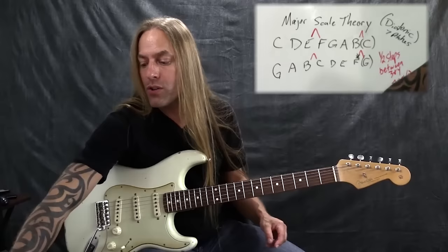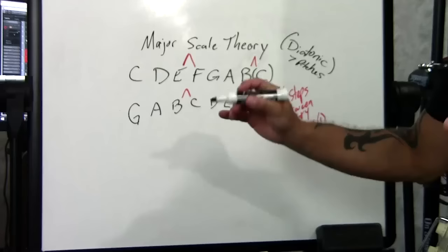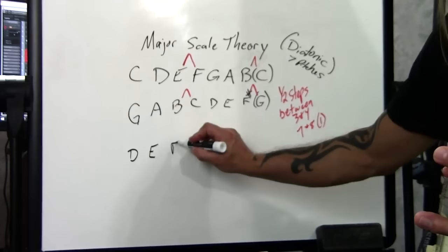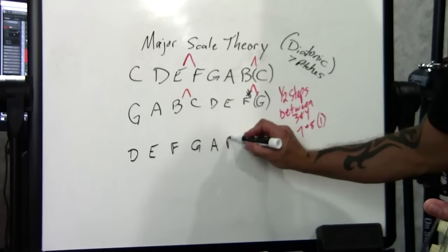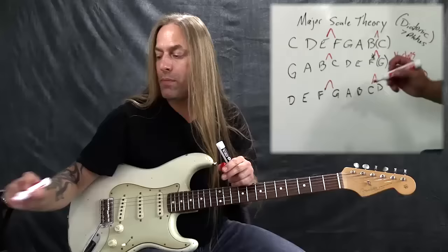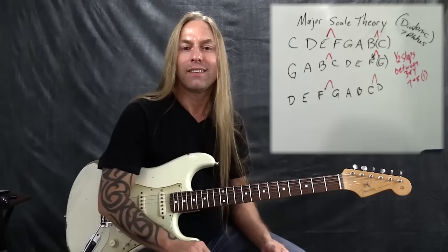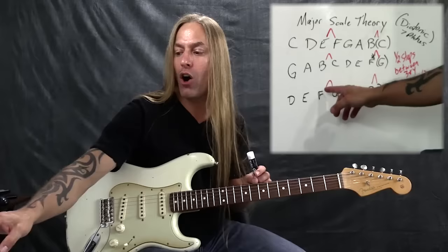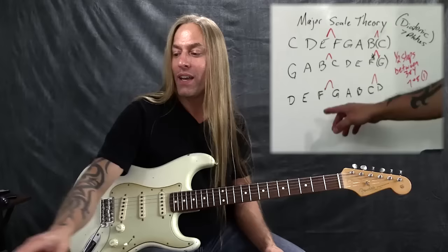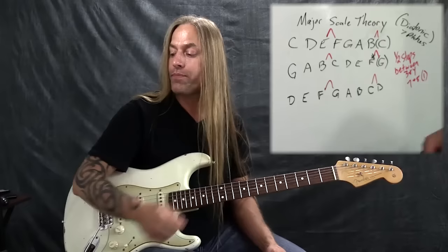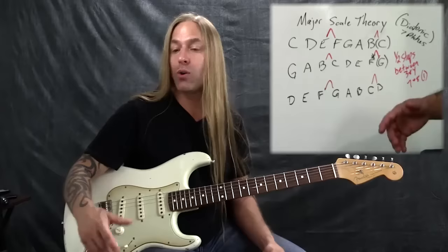Let's do the key of D. I'll put D, E, F, G, A, B, C, and D. Then put my half steps in. I can see there's a problem here because this should be a half step and it's a whole step — and this right here should also be a half step and it's a whole step. Instead of jumping to conclusions, I want to start at the beginning and work across.